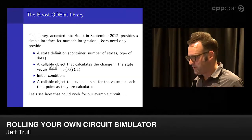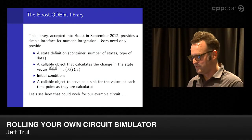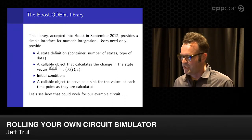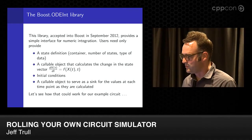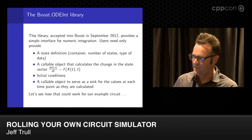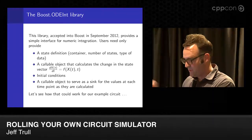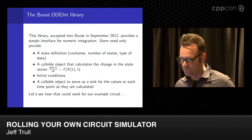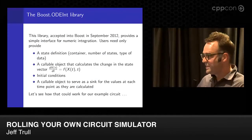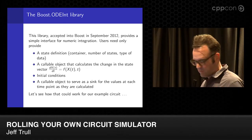You just need to supply four things to Boost.odeint. First, the state definition — like the current and the voltage at the output. Second, a callable object that instantiates your differential equations: given a state vector and time, it returns the change in the state vector. Odeint will repeatedly call this to determine values at each point. Third, the initial conditions — the first values of the state variables. Finally, a callable object that odeint calls every time it figures out the value at a time point, so you can store or print it.